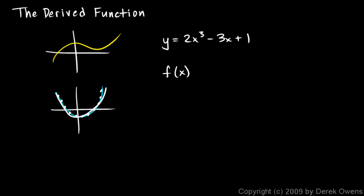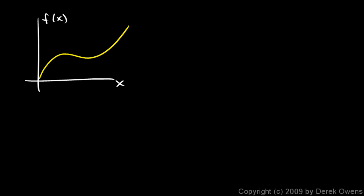The derivative tells us the slope of the original function at any point x. If we call our original function f of x, it's common to refer to the derivative as f prime of x — that's just notation; the prime mark doesn't relate to prime numbers, it just distinguishes the derivative from the original function. Now suppose we have some curve in the plane. We can think of it as being made up of a bunch of little tiny straight line segments, each with a slope.